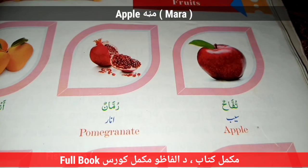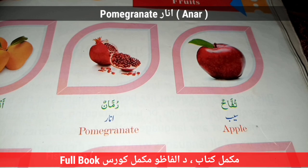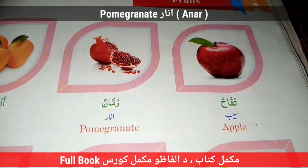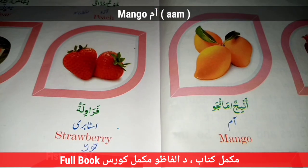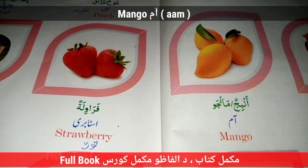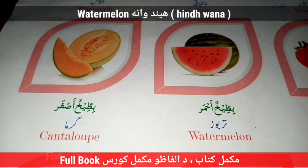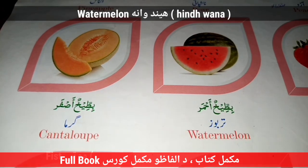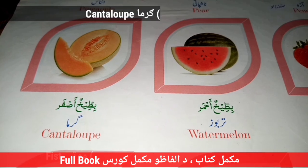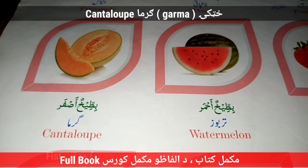Apple — Manan. Pomegranate — Anaar. Mango — Am. Strawberry — Tooth. Watermelon — Hindwana. Cantaloupe — Garma.